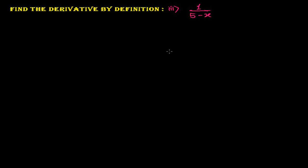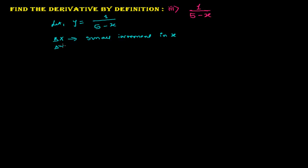As we were doing in previous videos, let me suppose my function. Let y equals 1 over (5 minus x). I need to suppose that delta x is a very small change — a small increment in x — and similarly delta y is a small increment in y.